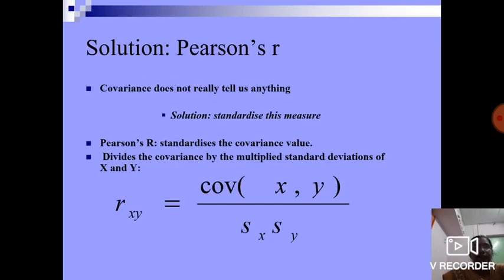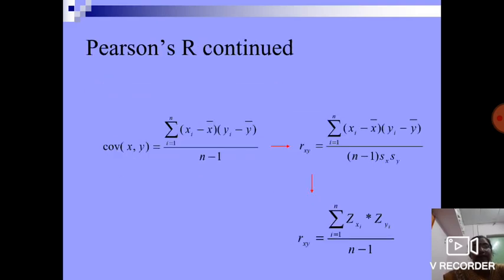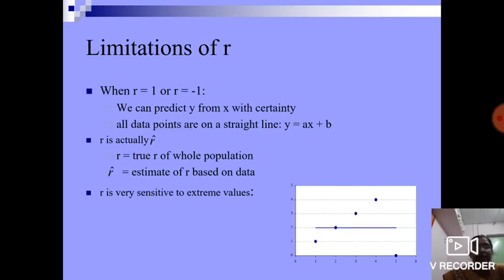Covariance does not really tell us anything. Pearson's r standardizes the covariance value, divides the covariance by the multiplied standard deviation of x and y, which is Rxy equals covariance of (x,y) divided by Sx times Sy. Sx and Sy are the standard deviation values.